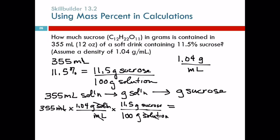And now we get out the calculator: 355 times 1.04 times 11.5 divided by 100. Three sig figs, 42.5 grams of sucrose. That's a lot of sugar. Any questions?